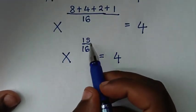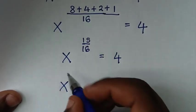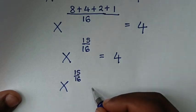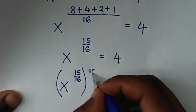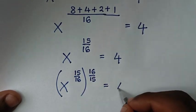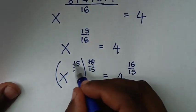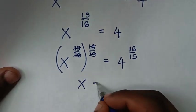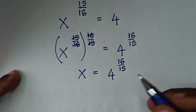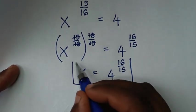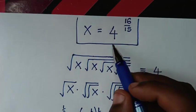In the next step, we multiply by the power of the reciprocal of 15 over 16, which is 16 over 15. This and this will cancel, so x is equal to 4 to the power of 16 over 15. This is the final answer for the value of x in our problem: 4 to the power of 16 over 15 — the same as the answer in the first method.